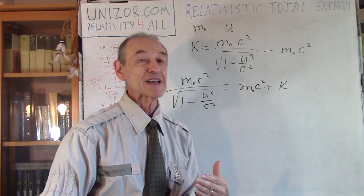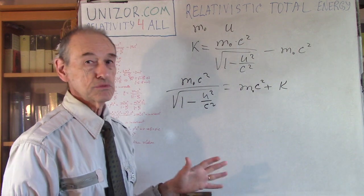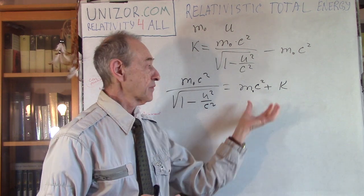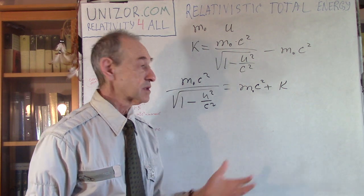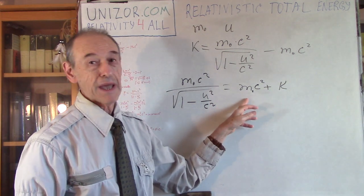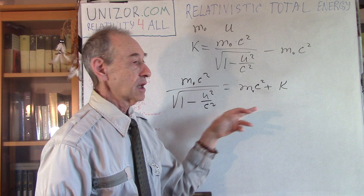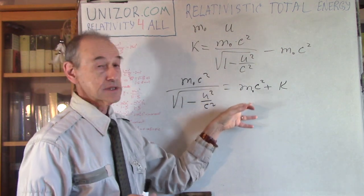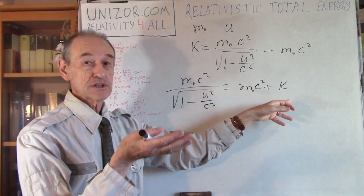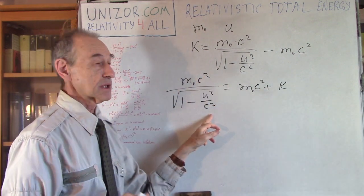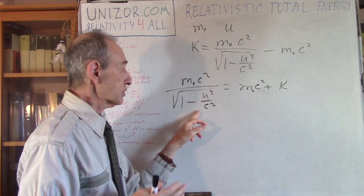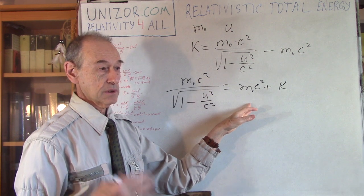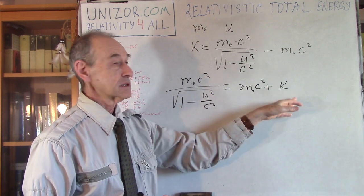What Einstein basically proposed — and it was confirmed in many experiments and theoretically justified in many different ways — is that this term m0 c squared is an energy. It just stays with the body as a constant. He assumed this is energy which is concentrated in the body just based on its rest mass — that's an amount of energy concentrated in the body simply because it has mass. As the body starts moving with a certain speed, we add kinetic energy to it as well.